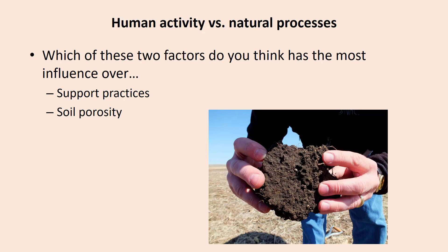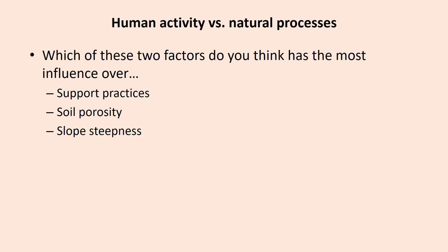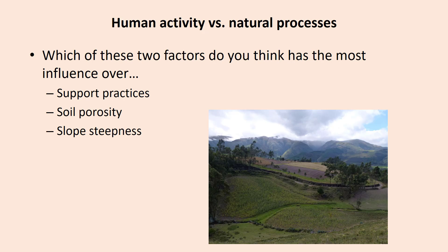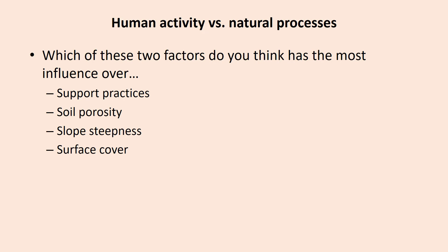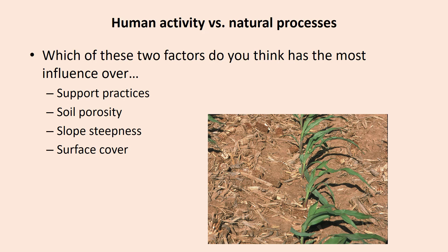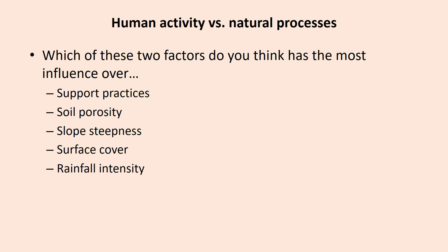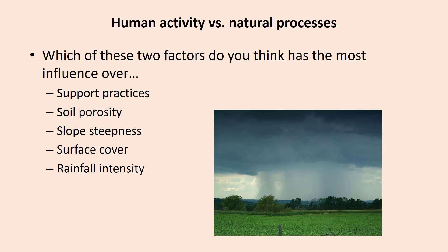Texture, organic matter, and biological activity are examples of natural processes. Tillage and driving machinery are examples of human activities. Slope steepness is mostly natural, except in areas where terracing is a common practice. Surface cover is mostly human — it is everything that protects the soil from raindrops, and can include rock fragments, but is dominated by live vegetation and plant residue left on fields or mulch. Rainfall intensity is natural.